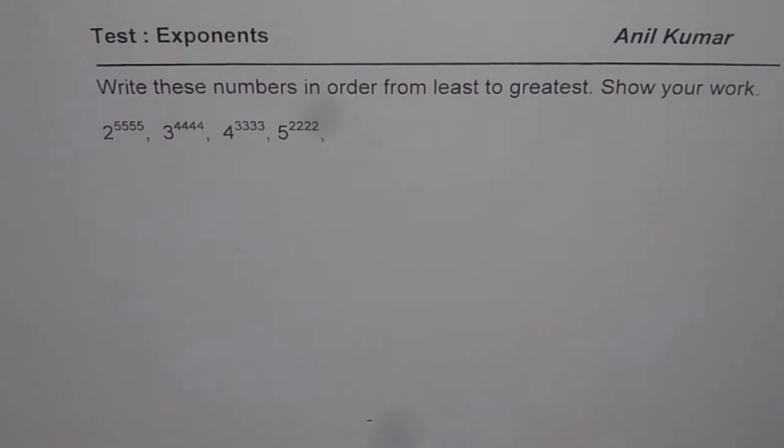2 to the power of 5555, 3 to the power of 4444, 4 to the power of 333, and 5 to the power of 222. So if you have a series like this, how can you arrange them from least to greatest?